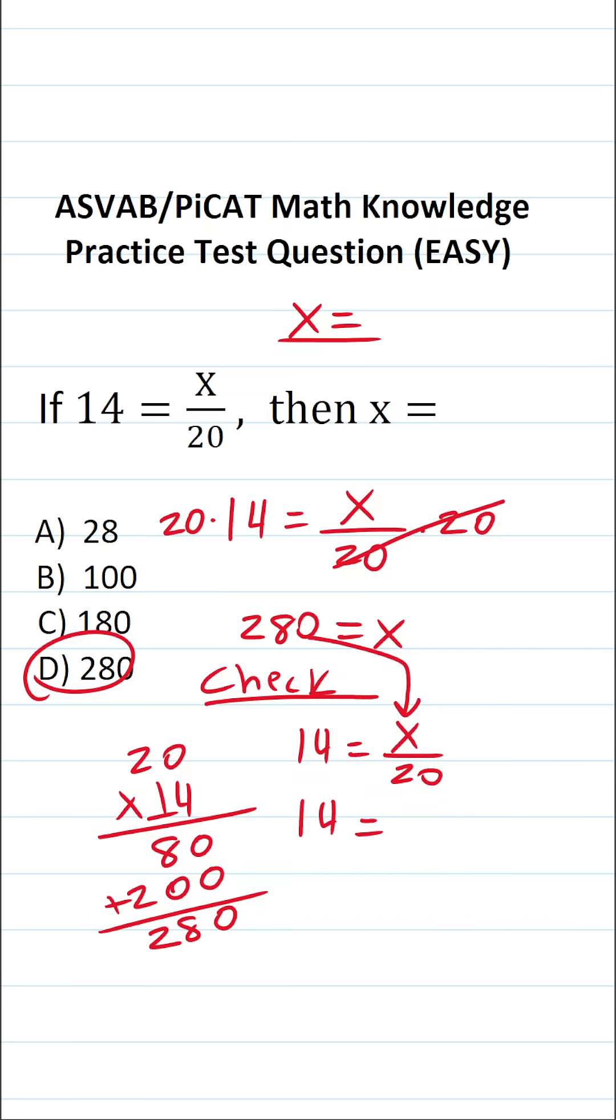So this becomes 280 over 20. We can cross out these corresponding zeros. This becomes 14 equals 28 divided by 2. 28 divided by 2 is in fact 14. Since this is a true statement, I'm confident that D is the correct answer.